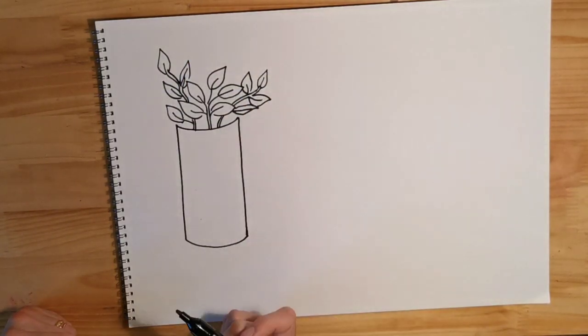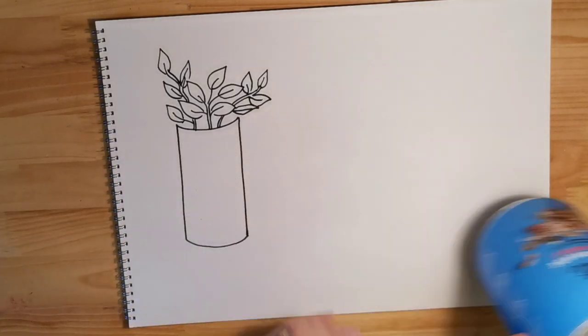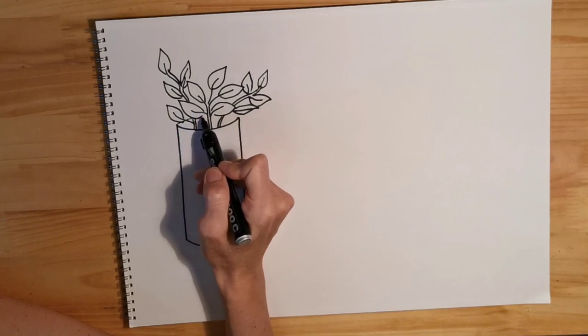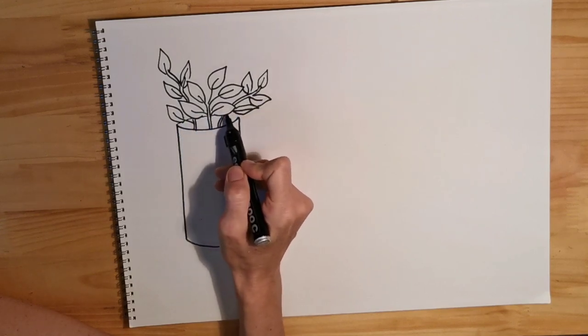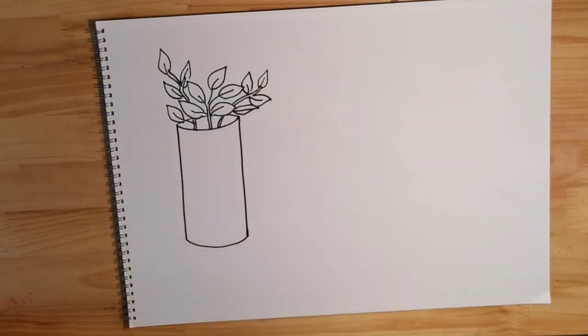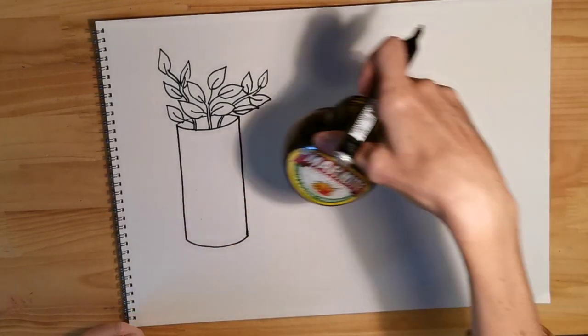To finish this off, I now need to show where the back of this is, so I'm just going to draw a line that will come behind. This is called an ellipse - the shape that I have at the top of my container is called an ellipse, and that's what makes something look three-dimensional like this. Okay, that's my first container.